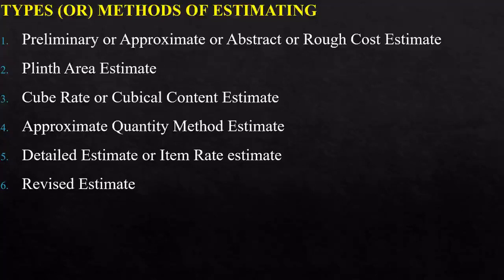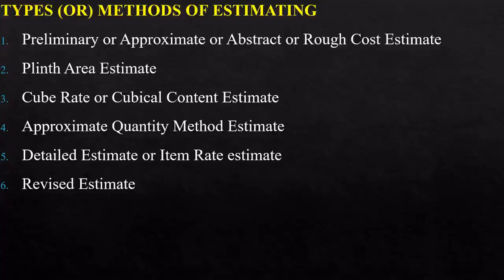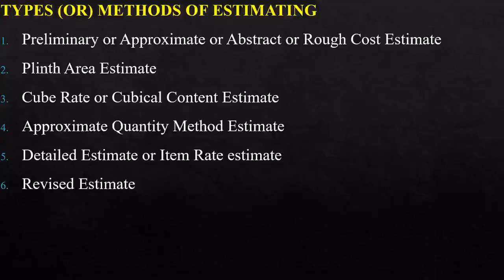The sixth type is a revised estimate, which is also a detailed estimate. A revised estimate is required when the original sanctioned estimate is exceeded or likely to exceed by more than 5%, or when the expenditure exceeds the administratively sanctioned amount by more than 10%, or when there are any material deviations from the materials for which sanction was originally obtained.